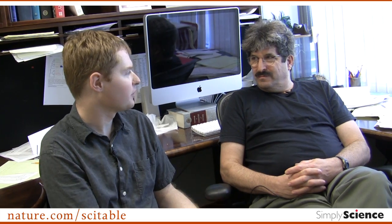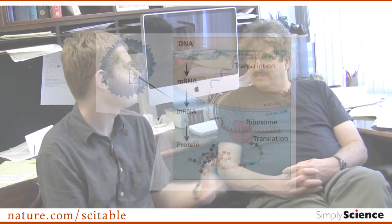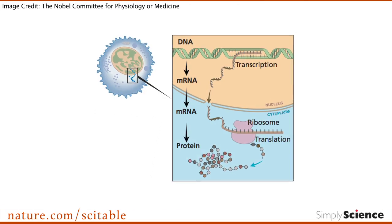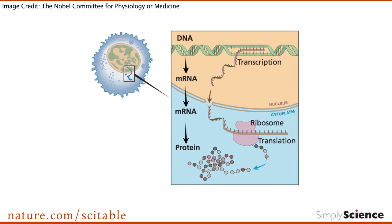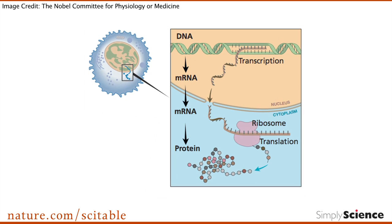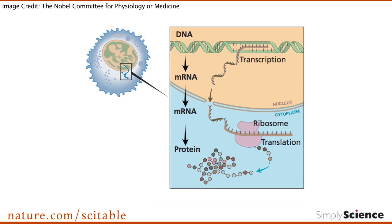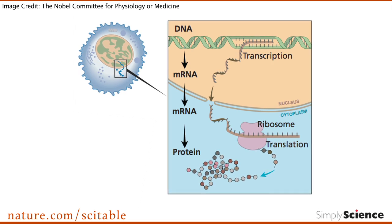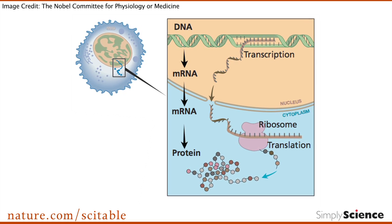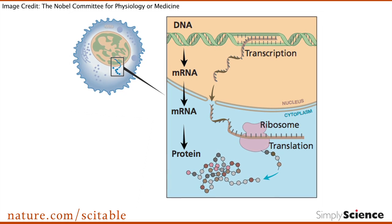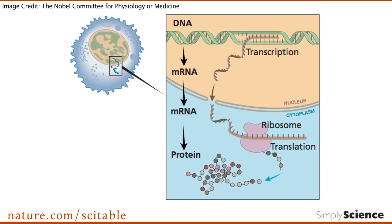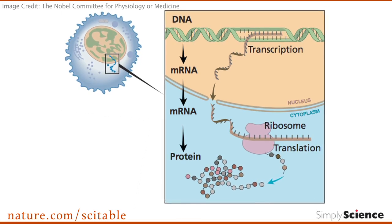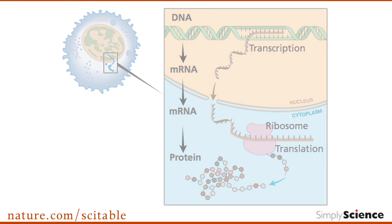So RNAi means RNA interference. That's something different than the RNA copy machine learned about in high school biology, right? So an RNA copy machine takes DNA and makes a template that ribosomes jump onto to make protein — that's what you learned about in high school.